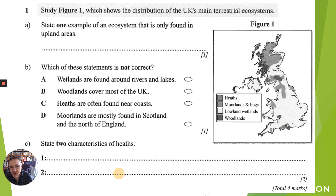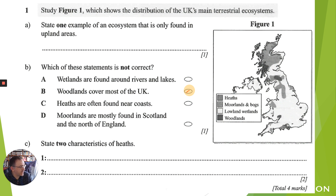'Which of these statements is not correct?' Wetlands are found around rivers and lakes - that makes sense. 'Woodlands cover most of the UK' - if we look at the map, there aren't woodlands scattered everywhere, they're not found in every location, so that statement is not correct. For two characteristics of heathland, you could talk about sandy soils or marshy areas, or animals found there like the ladybird spider and sand lizards.